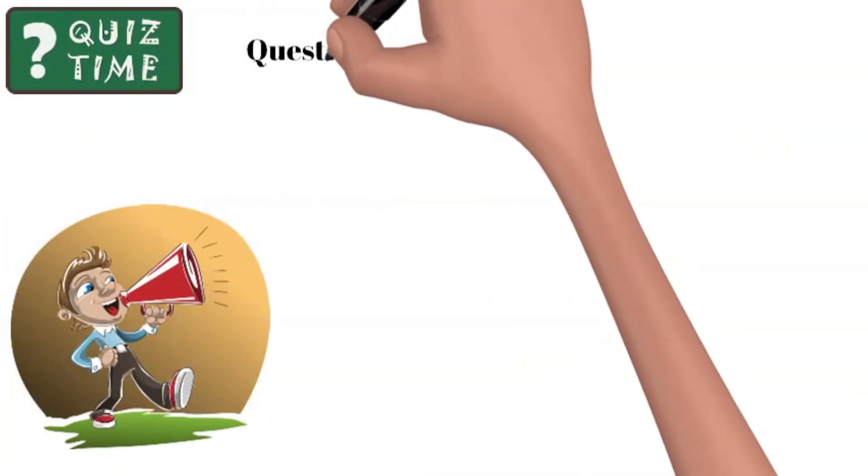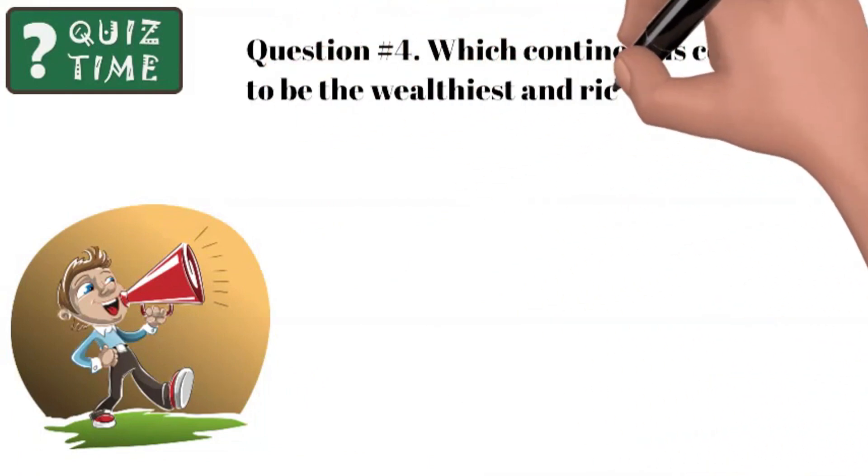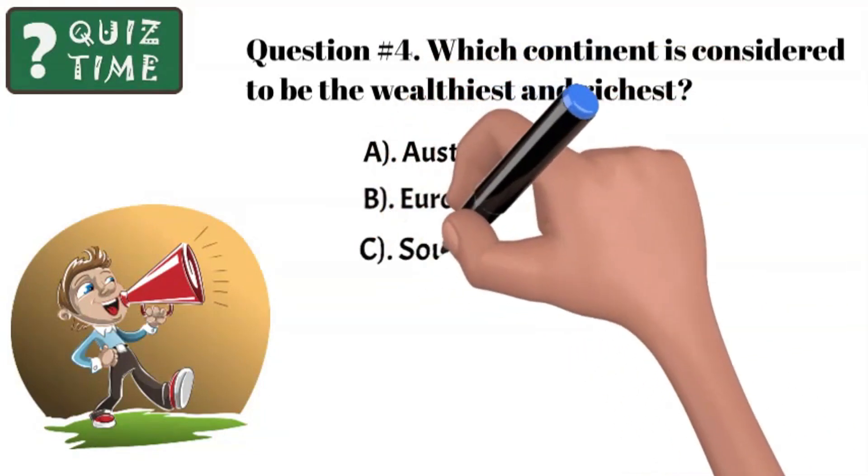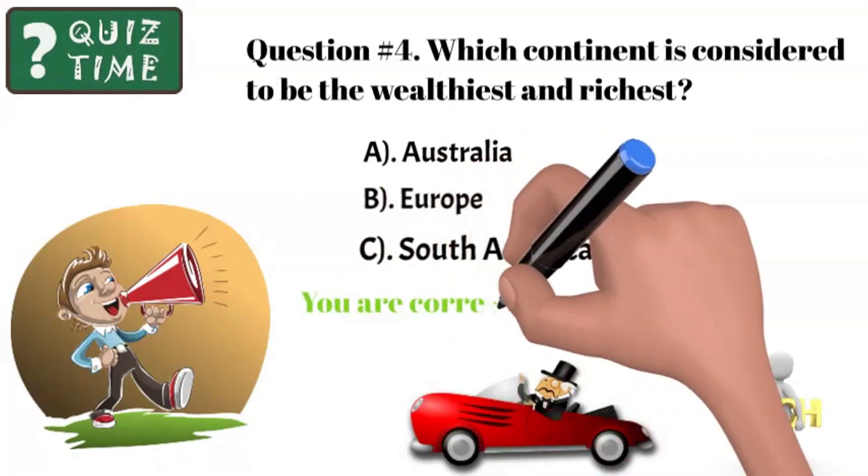Question number four: Which continent is considered to be the wealthiest and richest? A, Australia? B, Europe? C, South America? You are correct if you said B, Europe.